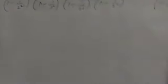1 minus 1 upon 2 square. This is a question of simplification. And we have to solve it up to 1 minus 1 upon 9 square.